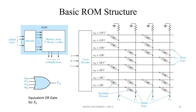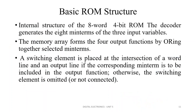This is the basic ROM structure consisting of a decoder and a memory array of N words by M bits, with an output line and an input line. This is a 3-to-8 decoder. The address is sent to the address decoder. The decoder generates 8 minterms of 3 input variables. The memory array forms 4 output functions by OR-ing together selected minterms.